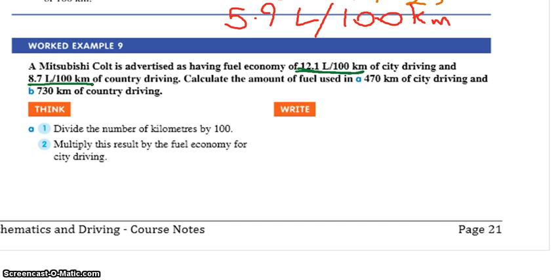So what are you going to do? Now they've given you instructions on how to do it. I'm going to go back to the way we looked at it last time. We have city driving, we have 12.1 litres per 100 kilometres. Would you agree? I hope so because that's what's in the question. What do you want your answer to look like? You want an answer of litres per how many kilometres? 470 kilometres.